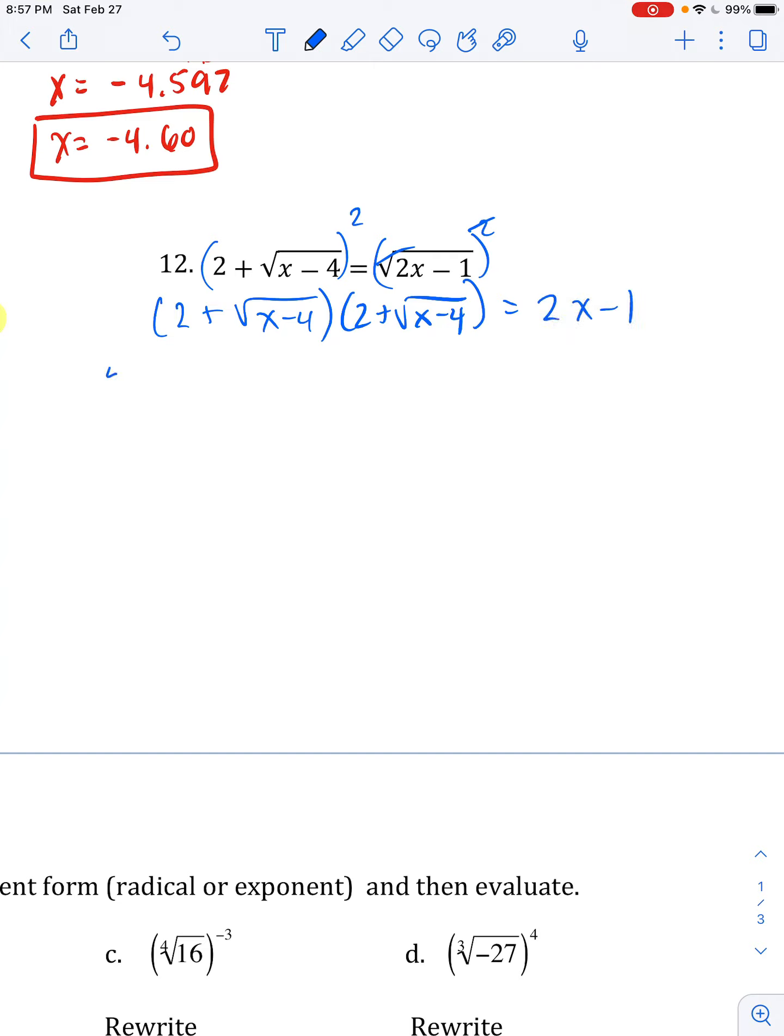All right, if I foil here I'll get a 4, then on the outside I'll get plus 2√(x-4), and on the inside I'll get plus 2√(x-4). Okay, and then the √(x-4) times itself will just give me x minus 4. So I have these fours that cancel.